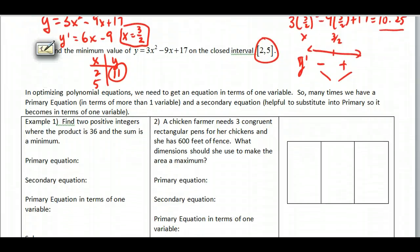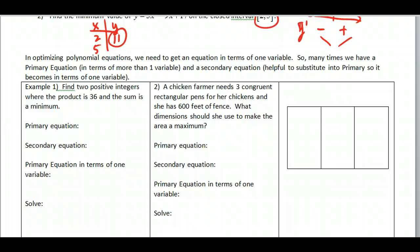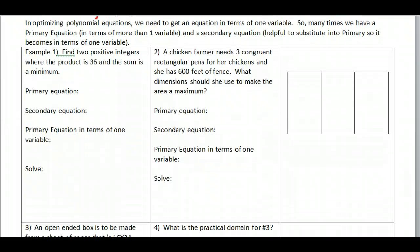When we want to optimize things, what we're doing is we are finding the maxes and the mins, but we need to write the equation to set this up. So what we do is we write something that's called the primary equation. The primary equation is something that we want to optimize, and a lot of times it's in terms of more than one variable. The secondary equation is helpful to substitute so everything becomes in terms of one variable.